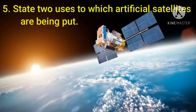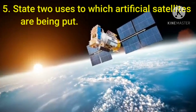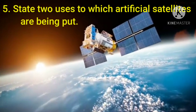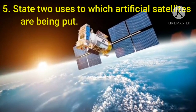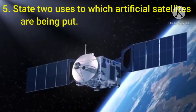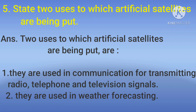Last question is, state two uses to which artificial satellites are being put. Answer is, number one, they are used in communication for transmitting radio, telephone and television signals. Number two, they are used in weather forecasting.